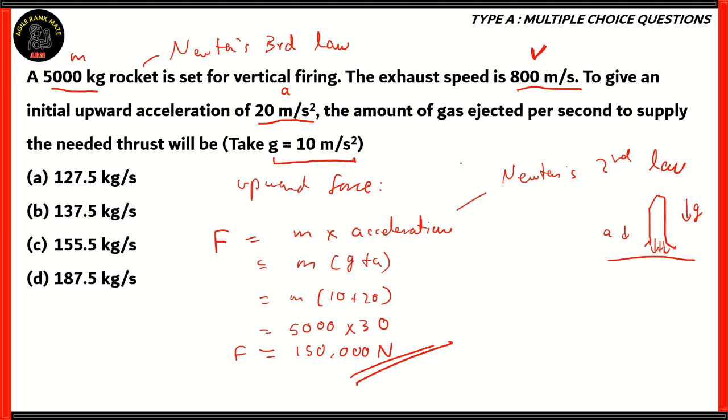Now, the question that's asked of us is to find out the amount of gas ejected, which basically translates to the rate of loss of mass with respect to time. Now, how do we find that out?